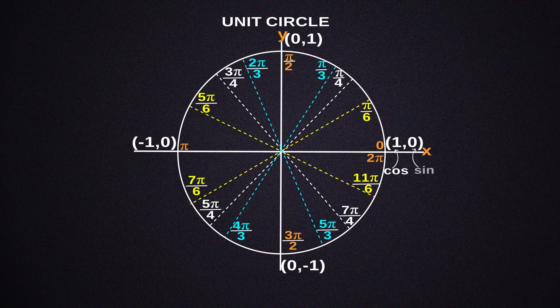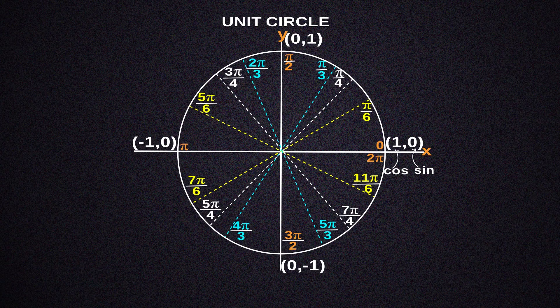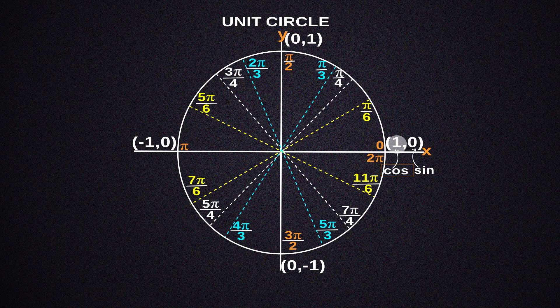This is really important. The cosine and sine of these two coordinates are also provided. Your cosine is the first value, the x coordinate. Your sine is the second value, which is the y coordinate. Now the cos is 1 and the sine is 0 at this angle of 0.